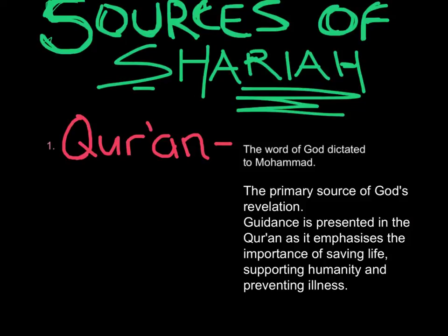The first source of guidance is the Quran, which is the word of God dictated to Muhammad by the angel Gabriel. It is a source book of Islamic principles and values. The Quran is considered to be the source of God's revelation, and guidance is presented in it as it emphasises the importance of saving life, supporting humanity, and preventing illness. The Quran is the first source which Muslims will look to in order to provide guidance for their life.